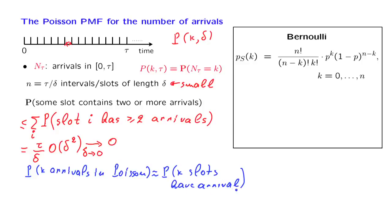What is this quantity? The probability that k slots have an arrival is something we can calculate using the binomial probabilities. Each one of the slots has a certain probability of having an arrival, and different slots are independent of each other by the defining properties of the Poisson process. Therefore, this approximation satisfies the properties of the Bernoulli process — a certain probability per slot and independence across slots — meaning we can use the PMF associated with the Bernoulli model to calculate this quantity.